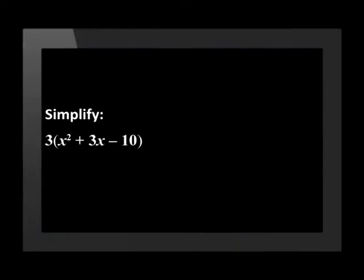This example asks us to simplify 3, open brackets, x squared plus 3x minus 10, close brackets. The expression contains just one term, but if we look inside the brackets, we see 3 terms separated by the plus and the minus. BODMAS tells us we must first simplify within the brackets before multiplying out the brackets.